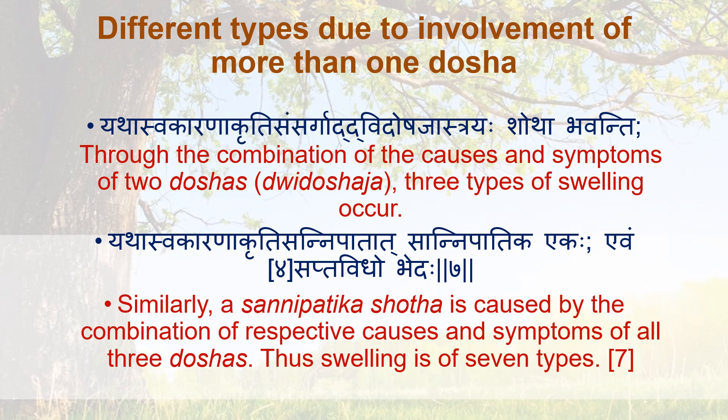Different types due to involvement of more than one Dosha: Through the combination of causes and symptoms of two Doshas, three additional types of swelling occur — Vata-Pitta, Vata-Kapha, and Kapha-Pitta. Similarly, Sannipatika Shotha is caused by the combination of causes and symptoms of all three Doshas. Thus swelling is of seven types total.